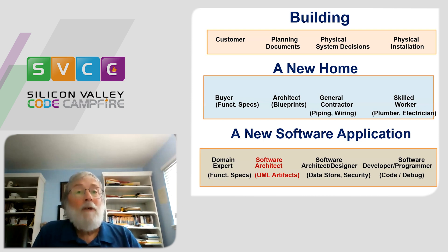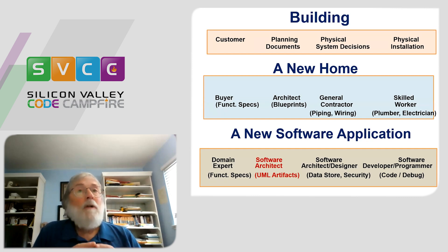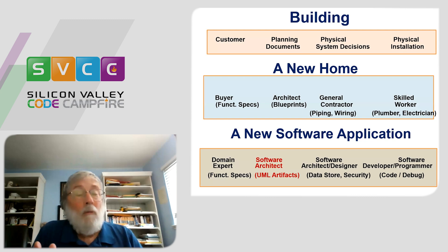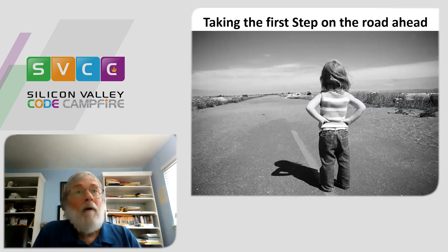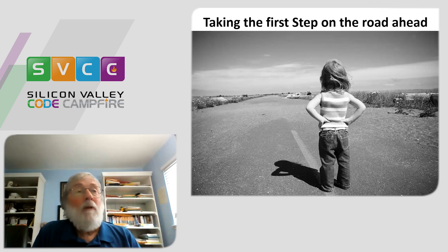Typically on a project, the software architect or main project designer worries about issues that transcend the particular application — issues like data store: are we going to use a central IT facility or put the application in the cloud? What about security schemes? These are like the zoning requirements — things you have to do because you live in a certain neighborhood. And finally, we have the developer, the software programmer, who comes in to code and debug the particular pieces of the application. So let's look at an example and see what thinking takes a functional specification toward an application.